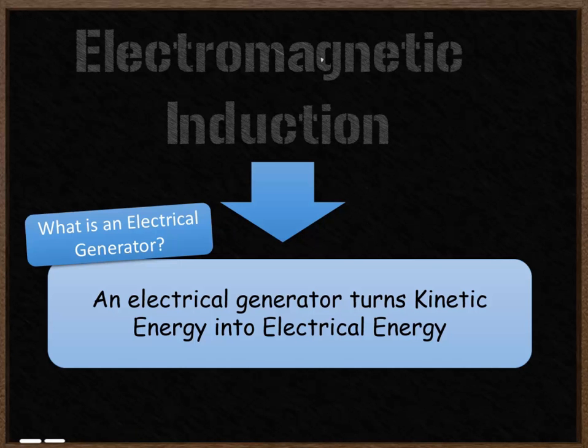Electromagnetic induction is an incredibly important process in generating electricity. It's how an electrical generator works. A generator turns the kinetic energy of a moving turbine or steam into electrical energy. It takes movement, a moving magnet, and transforms that into electrical energy by passing it through a coil of wire.